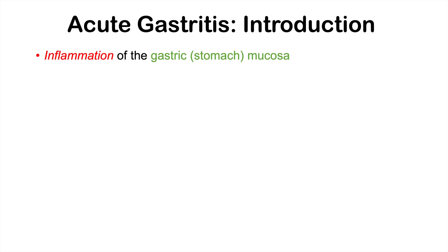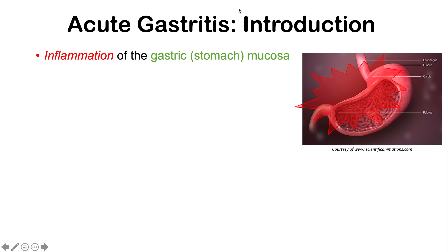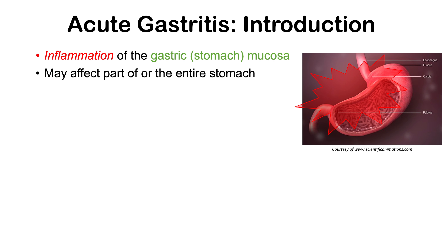Acute gastritis is an inflammation of the gastric or stomach mucosa. The prefix 'gastro' refers to the stomach, and 'itis' means inflammation — so inflammation of the gastric mucosa. Acute gastritis may affect part of the stomach or the entire stomach. If it affects the entire stomach, it's known as pangastritis.